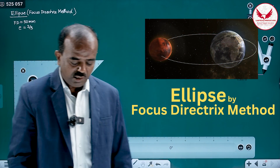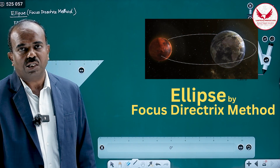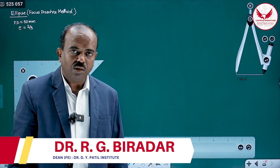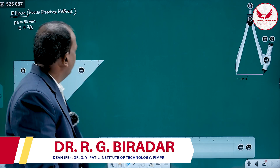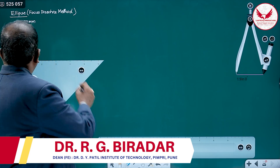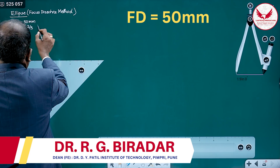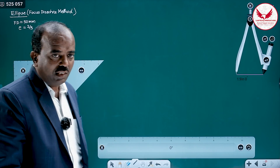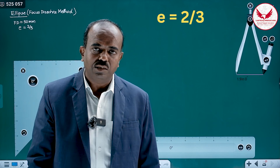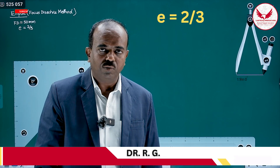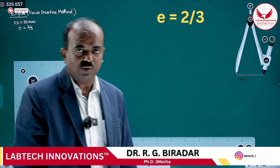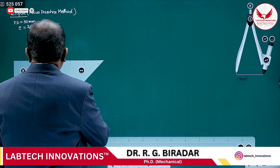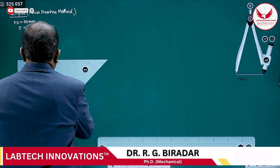Hello friends, today we will see ellipse by focus directrix method. The requirement for this method is focus to directrix distance which is 50 mm, and eccentricity is less than 1, given as 2 by 3. With this data, we will learn how to draw the ellipse.